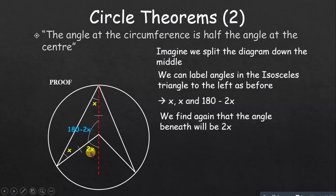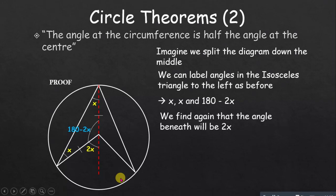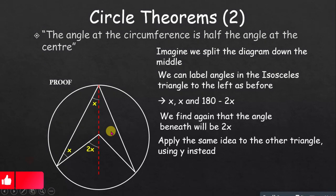Using the property that an exterior angle equals the sum of the two opposite interior angles, x plus x gives 2x for the exterior angle at the center. Alternatively, using angles on a straight line: if the interior angle at the center is 180 minus 2x, then the exterior part is 2x. So 180 minus (180 minus 2x) gives 2x.